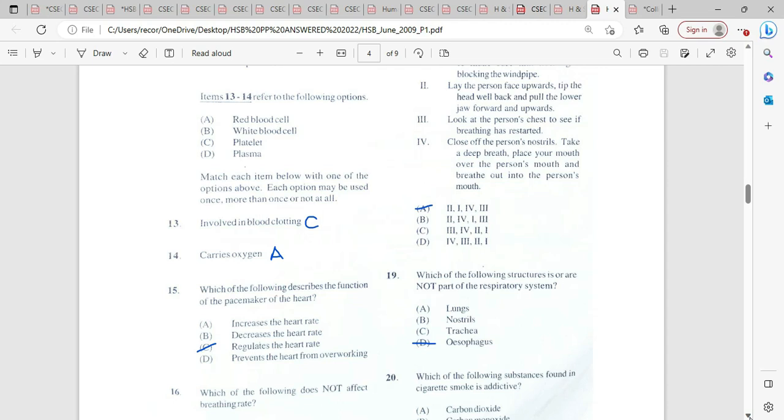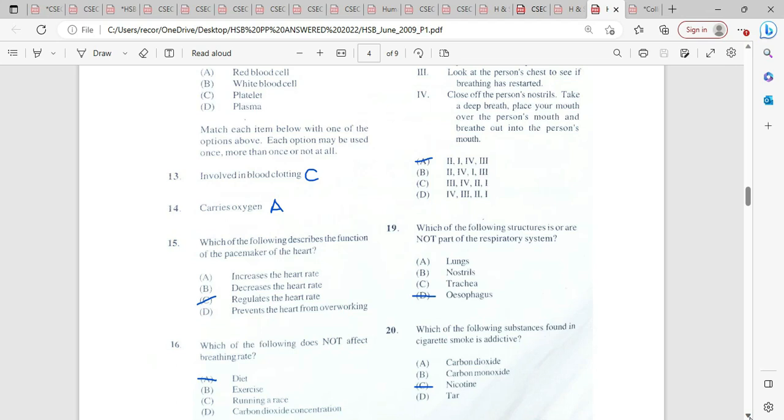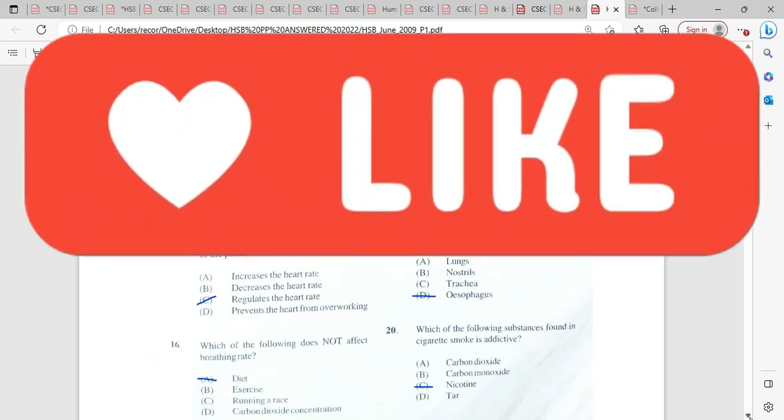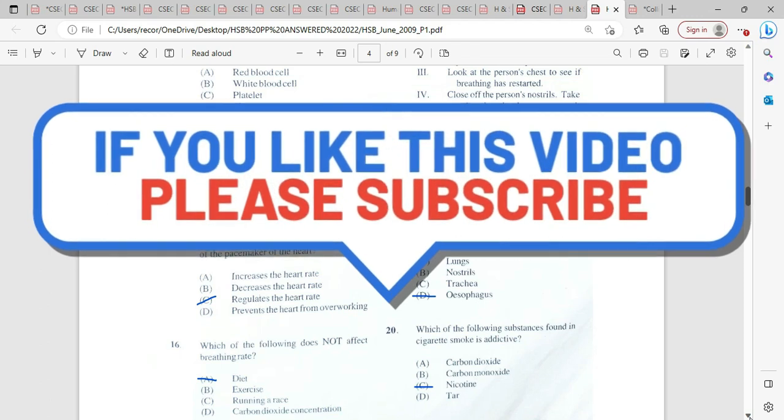Which of the following structure is not part of a respiratory system? It's going to be the esophagus. It's connected to the stomach and the buccal cavity. So it's not a part of the respiratory system. For number 20, which of the following substance found in cigarette smoke is addictive? It's meant to be nicotine. Carbon dioxide there being the most abundant greenhouse gas. Carbon monoxide affixes readily to the hemoglobin, thus preventing or reducing the amount of oxygen. And tar is trapped in the ciliated cells, thus causing individuals to cough as it causes an additional buildup of mucus.